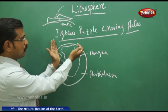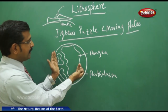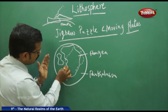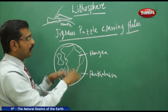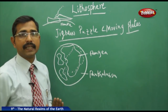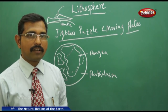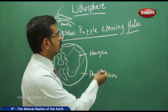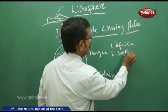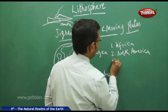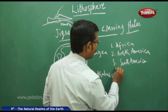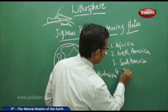For example, if I take Africa — it's not like Africa will always be in this position. Some billions of years ago it was in a different position, and in billions of years from now it may turn and change position. Geologists have concluded we have six major plates: Africa, North America, and South America are three of them, and we also have the Indo-Australian plate.